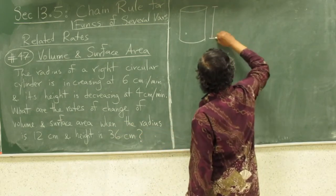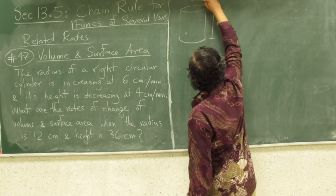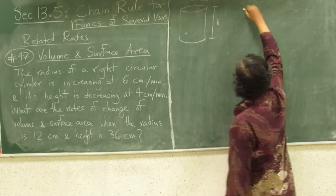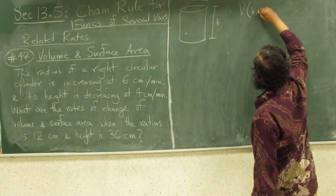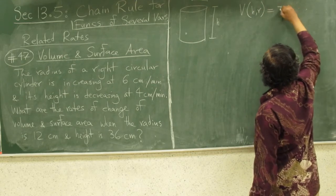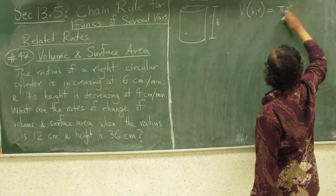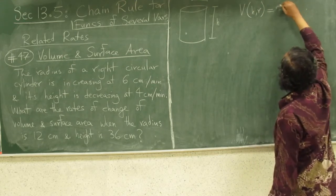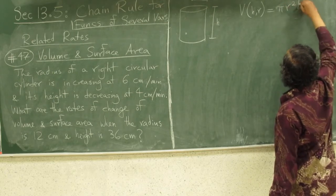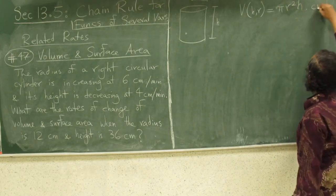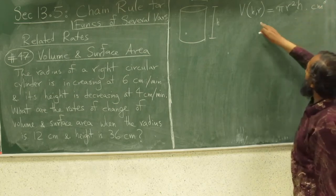Here, this is your h and this is your radius, and your function you are looking at is a function of both h and r. The volume is pi r squared h, right? This is centimeter cubed because it is volume.